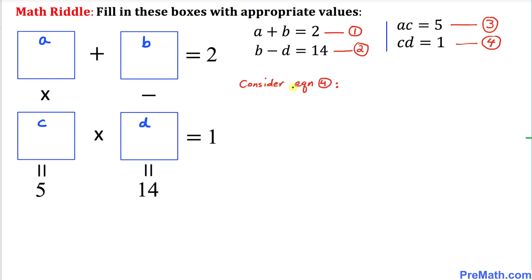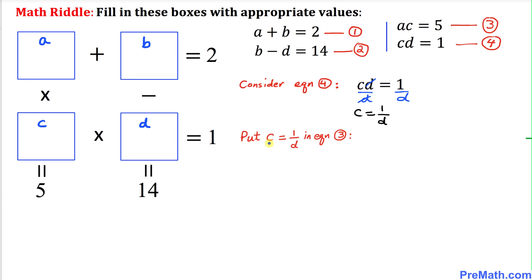Consider Equation 4: C times D equals 1. I'm going to solve for C by dividing both sides by D, so the D's cancel and we get C equals 1 over D.